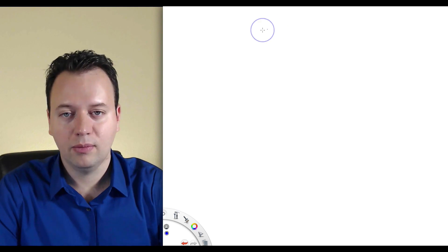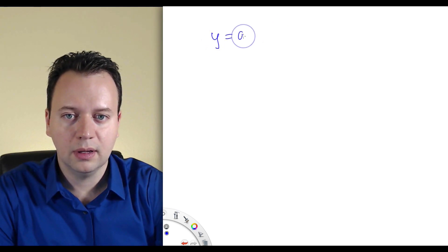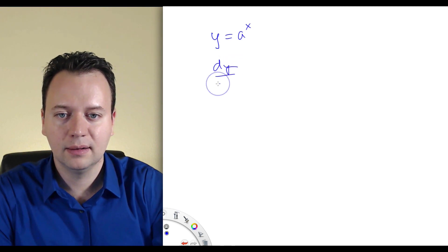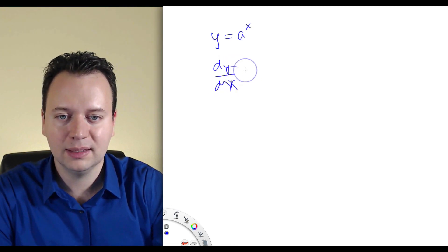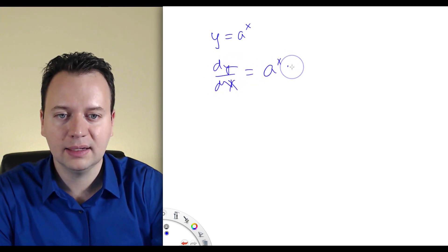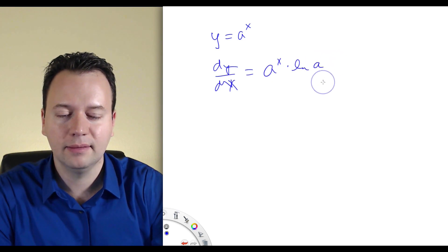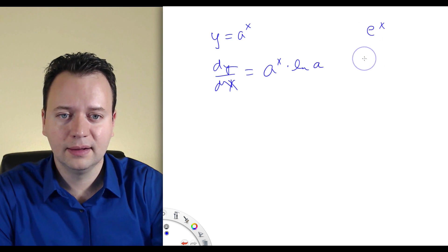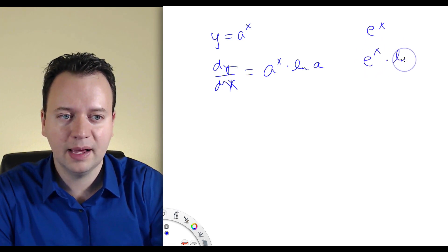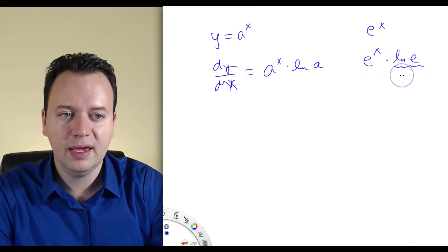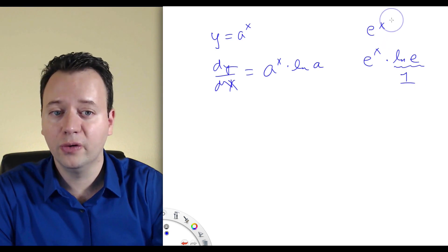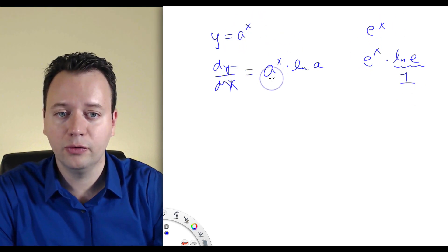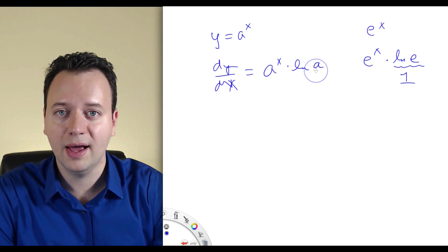That brings us to another derivative rule: the derivative of a to the x, where a is some constant, is a to the x times the ln of a. Notice this is consistent — if you have e to the x, the rule gives e to the x times ln of e, and ln of e equals 1, so the derivative is just e to the x. But for 5 to the x, the derivative would be 5 to the x times ln of 5, and so forth.